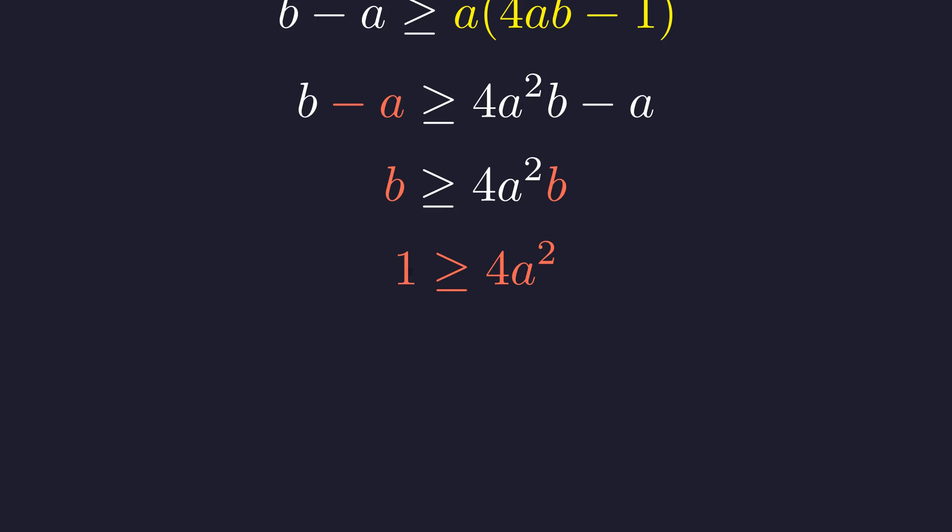Since A is a positive integer, its minimum value is 1. Thus, 4 times A squared is at least 4. The inequality claims that 1 is greater than or equal to a number that is at least 4, which is false.